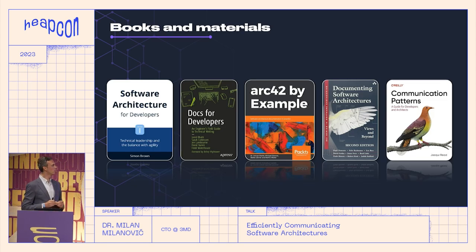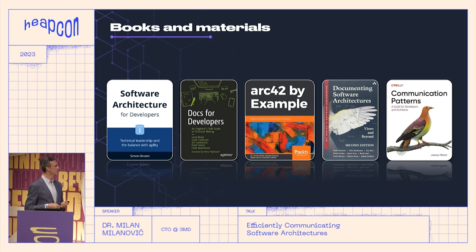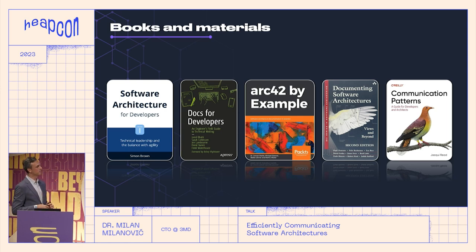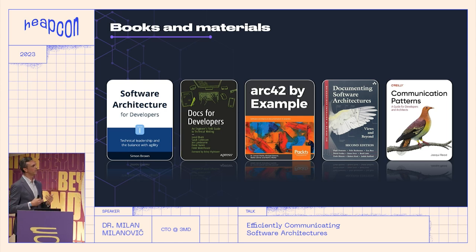For those who want to learn more and introduce these things to their teams and projects, there are a few books I can recommend. Software Architecture for Developers by Simon Brown, which talks mostly about the C4 model. Then Docs for Developers, with good notes on how to write really good documentation. And the Arc42 book. Documenting Software Architecture is a bit older but gives good foundations on this topic. And the new book, Communication Patterns, which released last month, will bring you some fresh ideas on this topic.